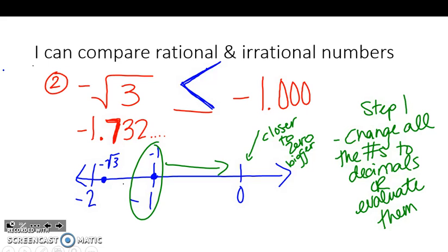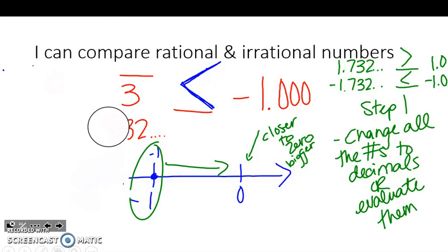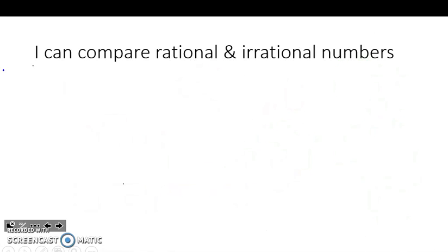Another way some people like to think of it is as the opposite of positive numbers. So if I had 1.732 and 1, looking at the positive numbers, 1.7 is going to be bigger than 1.0. It's the exact opposite if we're looking at the negative numbers. So if you want to think of them as positive first and then just flip the inequality, you can do that as well. We're going to do a couple more examples with negatives.